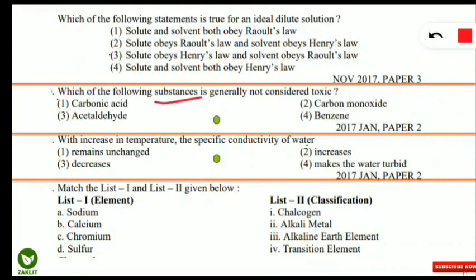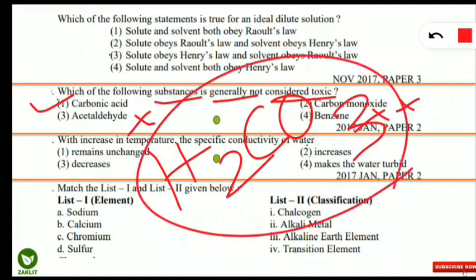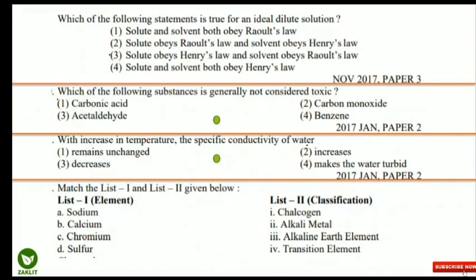The next question: which of the following substances is generally not considered as toxic? Options are carbonic acid, carbon monoxide, acetaldehyde, or benzene. The correct option is carbonic acid (H₂CO₃), which is not generally considered toxic because it is naturally present in the human body. Carbon monoxide, benzene, and acetaldehyde are all toxic in nature.